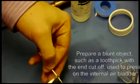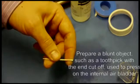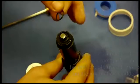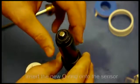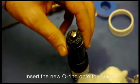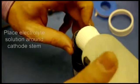Next get a toothpick and snip the end of it so it has a blunt end that you can use to press the air bladder in the cathode. Take your new o-ring, place it around the stem of the cathode, and then use fill solution and cover the tip of the cathode.